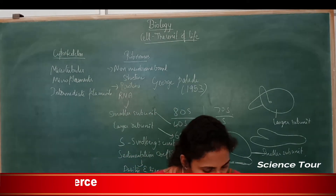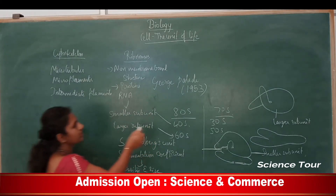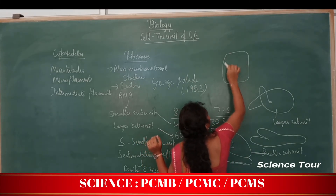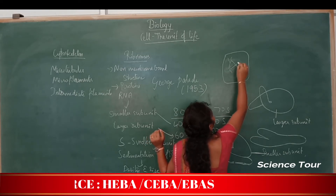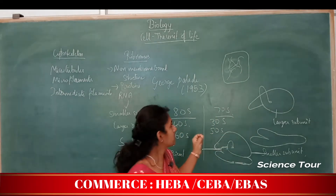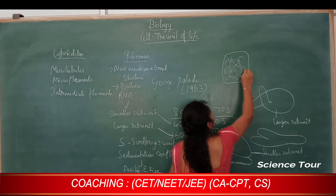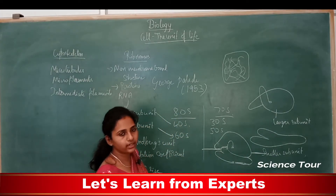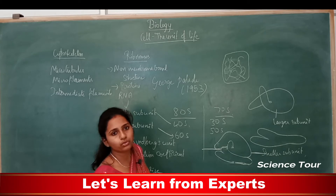The cytoskeletal system is present in the cytoplasm. In thin cells with no cell wall, this cytoskeletal system gives a definite shape and mechanical support to the cell. Inside the cell, the cytoplasm contains this network-like structure of very small, thin thread-like filaments.